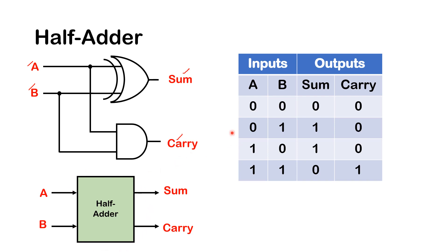To describe the operation of a half adder, I'm going to make use of this truth table here. On the left-hand side are the inputs A and B, and on the right-hand side are the outputs sum and carry.